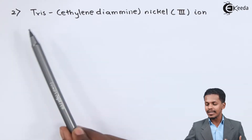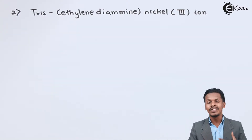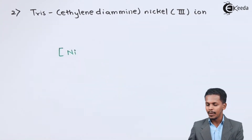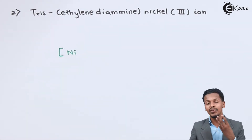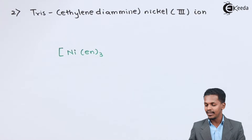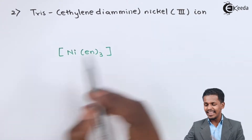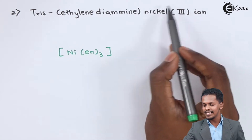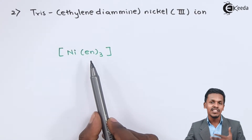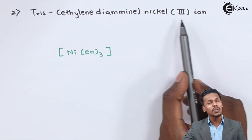The next example is tris(ethylenediamine)nickel(3) ion. The ligands associated with the central metal atom nickel are ethylenediamine. 'Tris' means 3, so ethylenediamine is represented as en, giving 3 moles of en associated with the nickel. There are no other ligands.